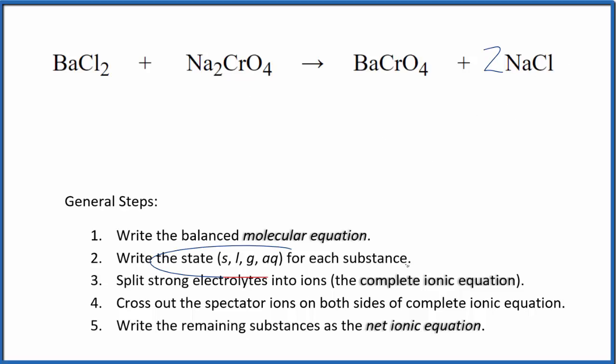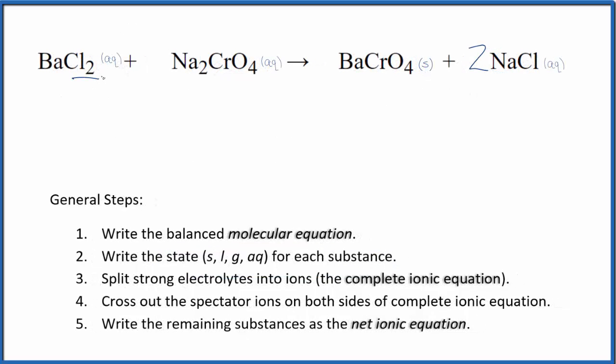Next we write the state for each substance. You know your solubility rules. Chlorides are very soluble. So barium chloride and the sodium chloride, those are going to be soluble, dissociate, split apart into their ions. For the sodium chromate, because we have sodium here, sodium compounds are very soluble. So this will be aqueous as well.